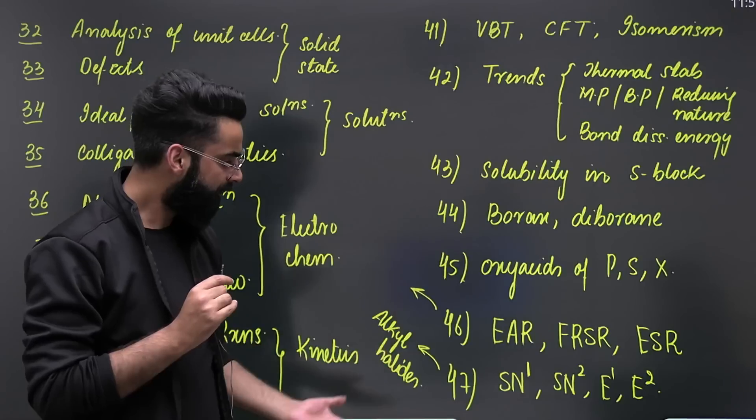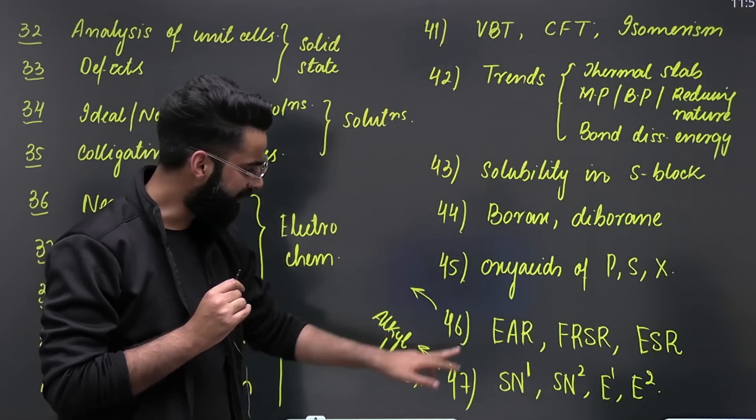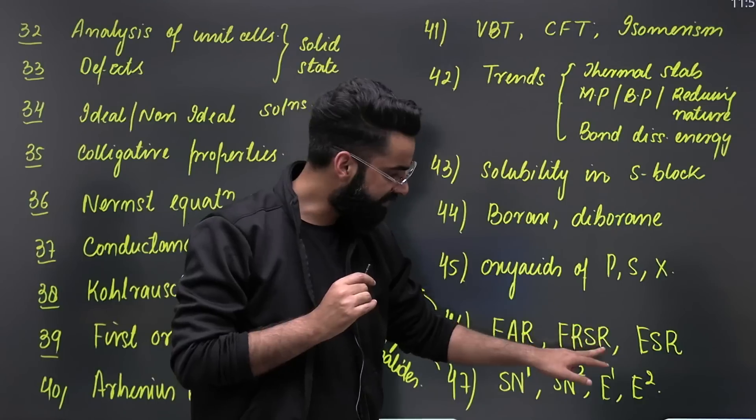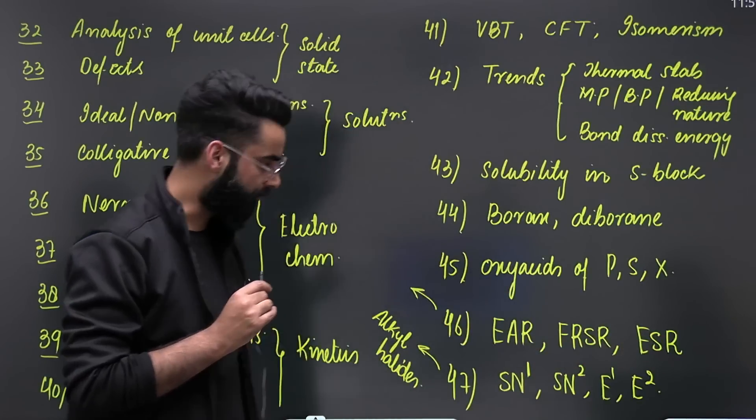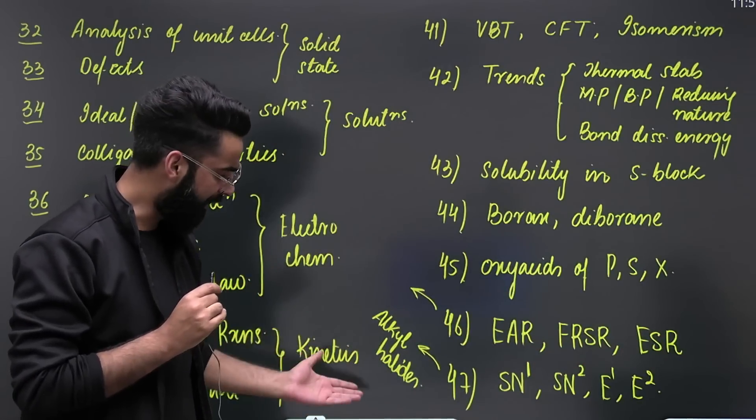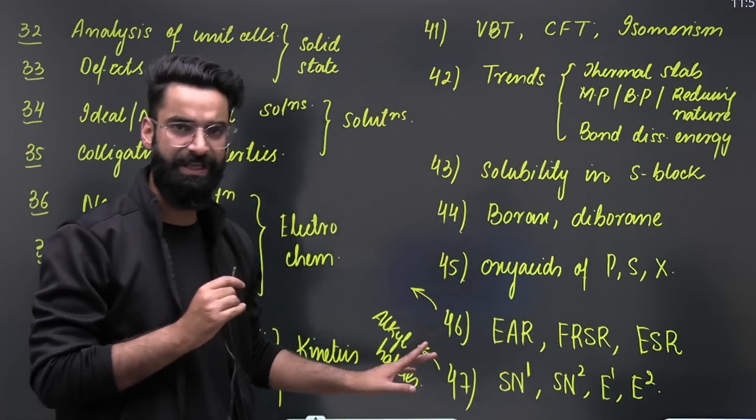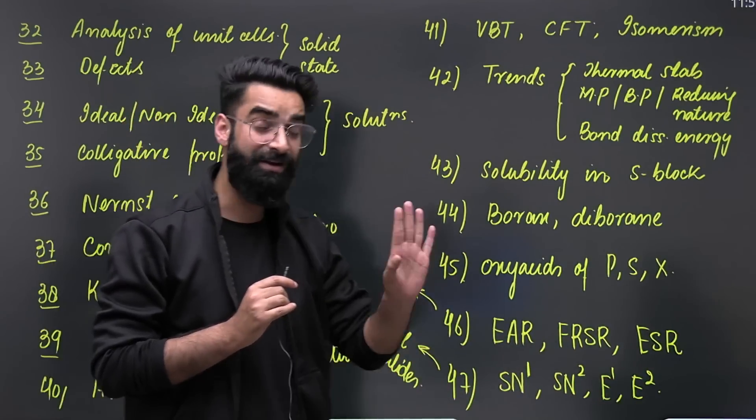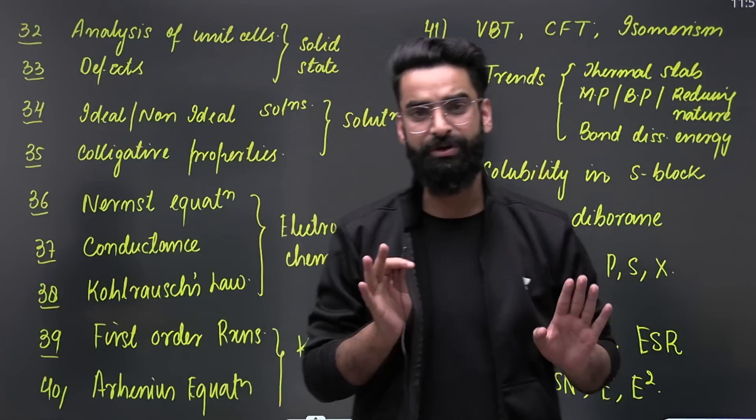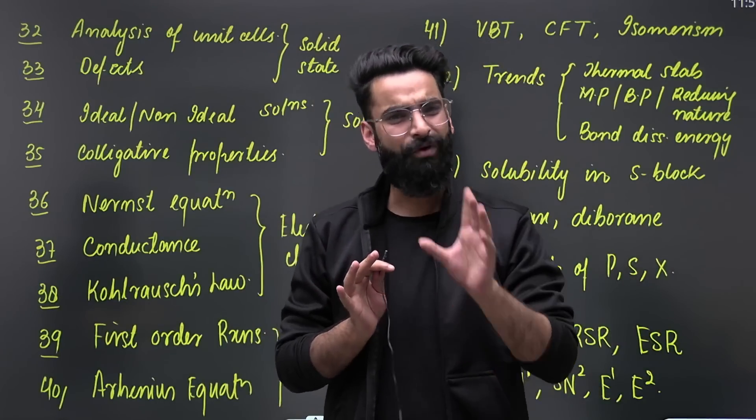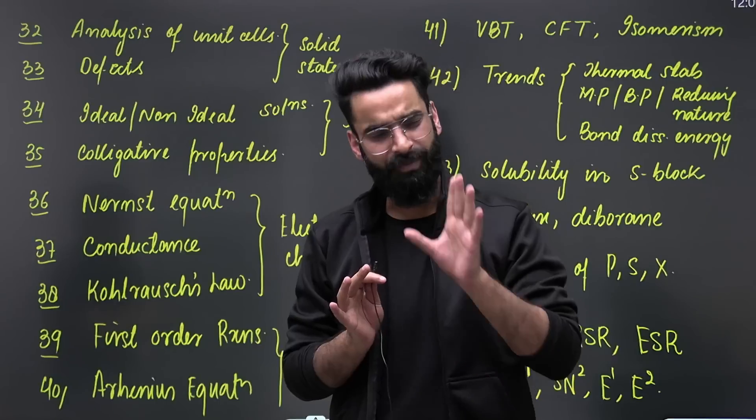When it comes to organic chemistry, basically EAR, FRSR, and ESR reactions - you have to read them carefully. Then in your alkyl halides, you have got SN1, SN2, E1, and E2. All these reactions are equally important. Similarly, naming reactions - I'm sure you now made a separate sheet for the naming reactions. Please go for the naming reactions as well.